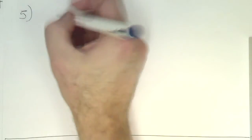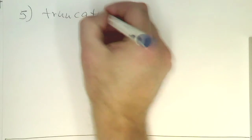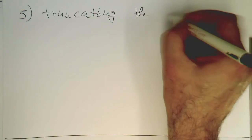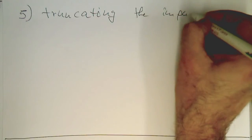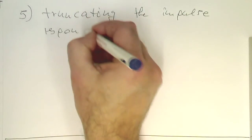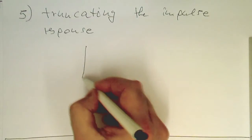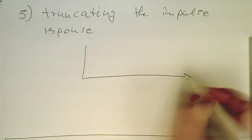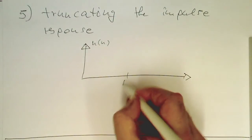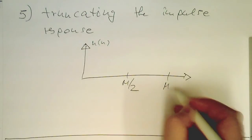Step number 5 is truncating the impulse response. After we have shifted this, that's our H(n) in the shifted version, where M is the number of taps.